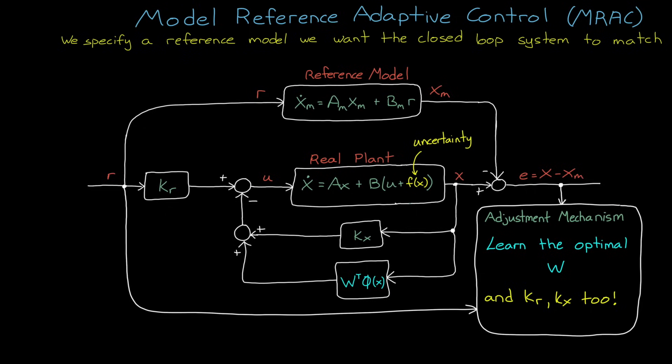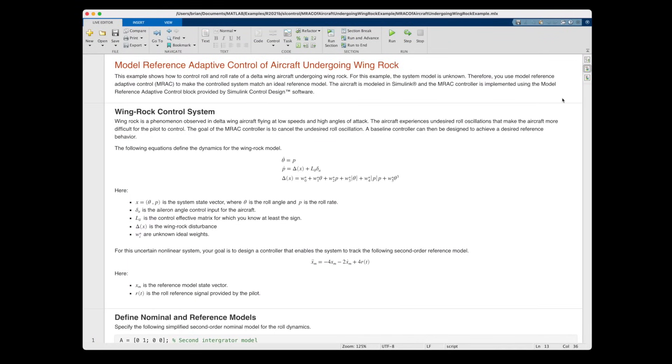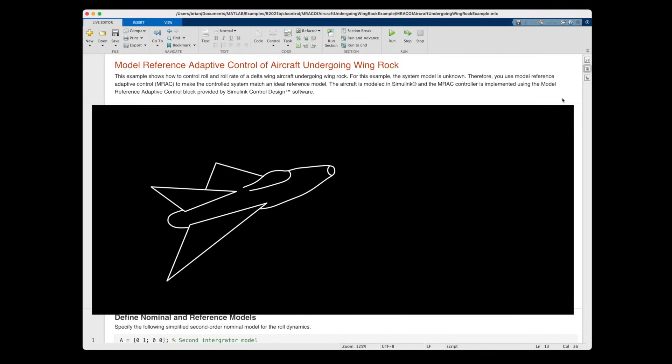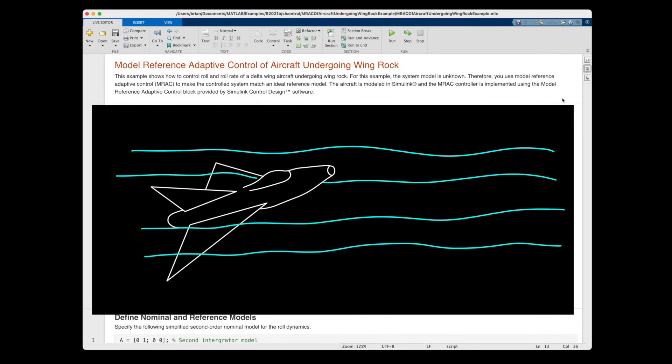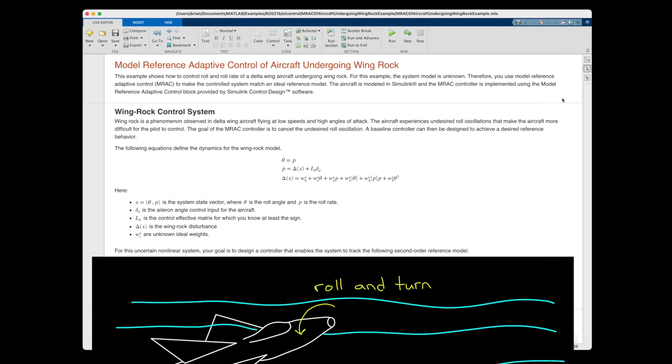Now, before I end this video, I want to show you a version of model reference adaptive control in action. This example shows how to use MRAC to control the roll of delta wing aircraft by canceling out the undesired roll oscillations that can occur. The general problem is that with delta wing aircraft that are flying at high angles of attack, the stalling of one wing before the other can induce a roll and a slight turn that will stop the stall on that side, but then cause the other wing to stall. And then the opposite happens, causing a back and forth oscillation.